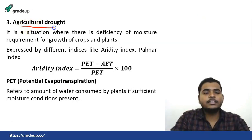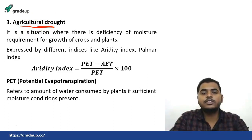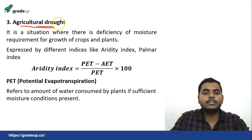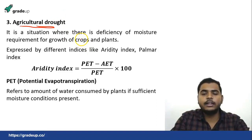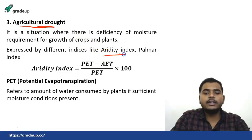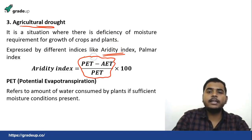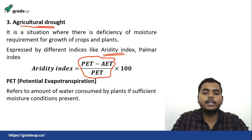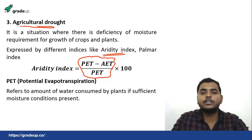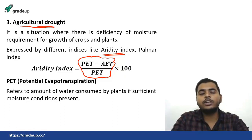The third type is agricultural drought. It is a situation where there is a deficiency of moisture which finally results in less production or less harvesting of crops and plants. It may be expressed by different indices like the Aridity index or the Palmer index, though the Aridity index is more common and is generally asked in objective questions. It is given by: Aridity index = (PET − AET) / PET. PET is potential evapotranspiration and AET is actual evapotranspiration.